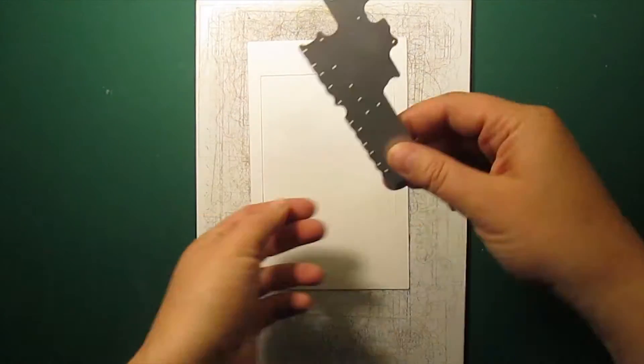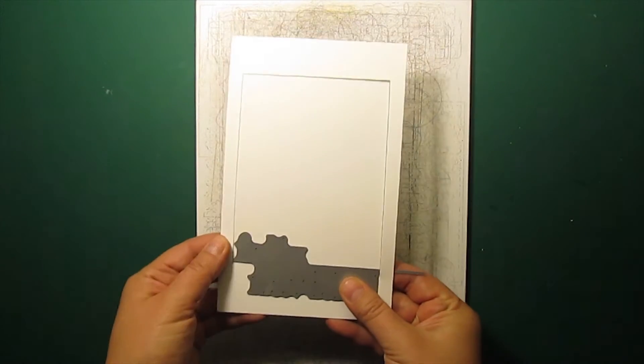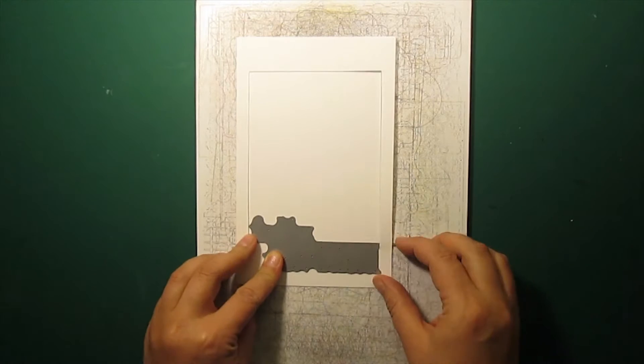To make a frame I've cut three sides and left one side uncut like this. I'm positioning the Feliz Navidad die at the bottom like this and then run it through the die cutting machine.